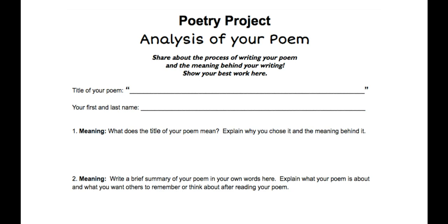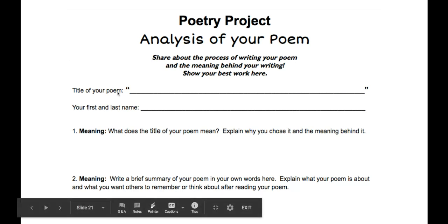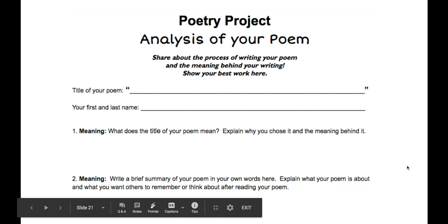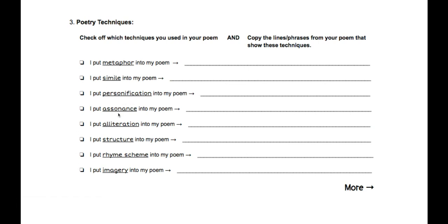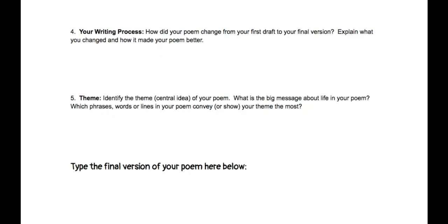And lastly, if you are doing an analysis of your poem, make sure to have your title, your name, and the meaning of your poem — you're going to explain it. Give a brief summary in your words explaining what your poem is about and what you want others to remember. Then tell us what poetry techniques you included — that could be metaphor, simile, personification, assonance, and so on. Also cover your writing process: how did your poem change from your first draft to your final version?